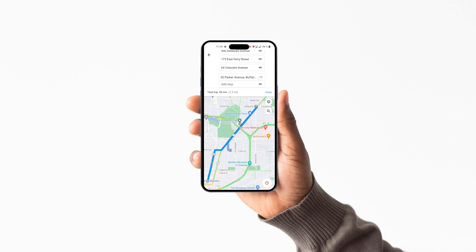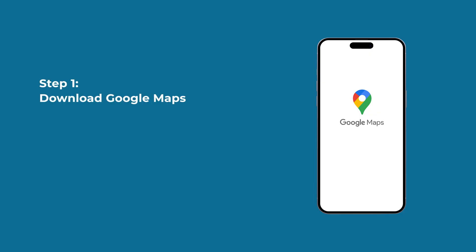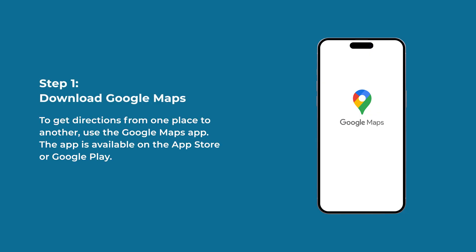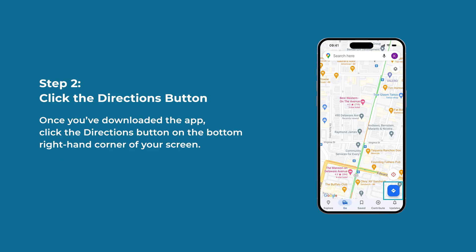Here is a step-by-step guide to using Google Maps Route Planner on mobile. Step 1: Download Google Maps. To get directions from one place to another, use the Google Maps app, available on the App Store or Google Play. Step 2: Click the Directions button. Once you've downloaded the app, click the Directions button on the bottom right-hand corner of your screen.